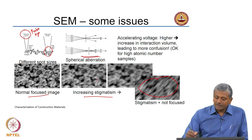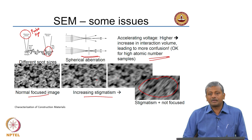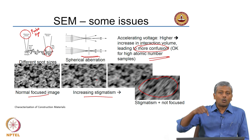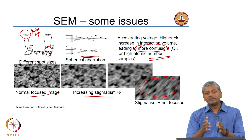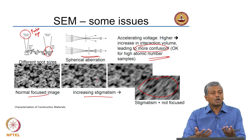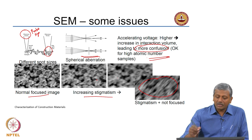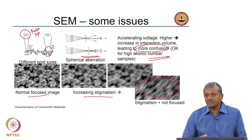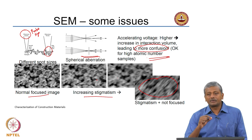We discussed that higher accelerating voltage increases the amount of interaction with the sample. The problem is it leads to more confusion when collecting X-rays for composition analysis, because the information you get will come from a larger depth, making data interpretation more confusing. However, for higher atomic number samples which are quite dense, the penetration needs to be sufficient to get a representative idea, so in those cases it is acceptable to use a higher accelerating voltage.